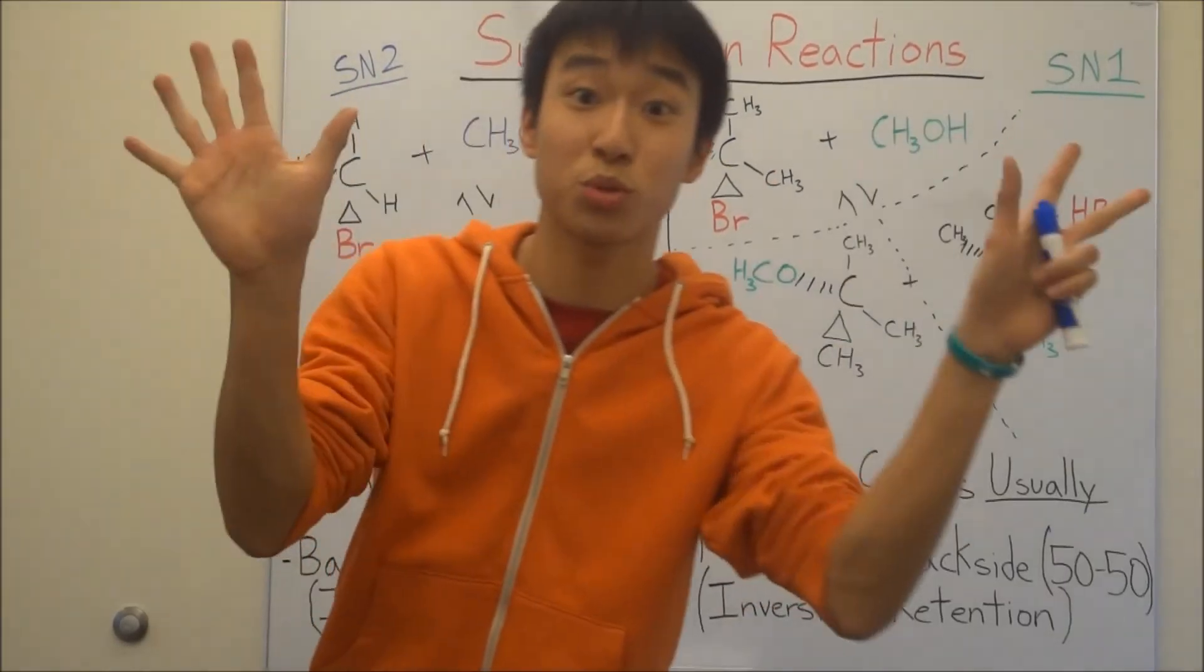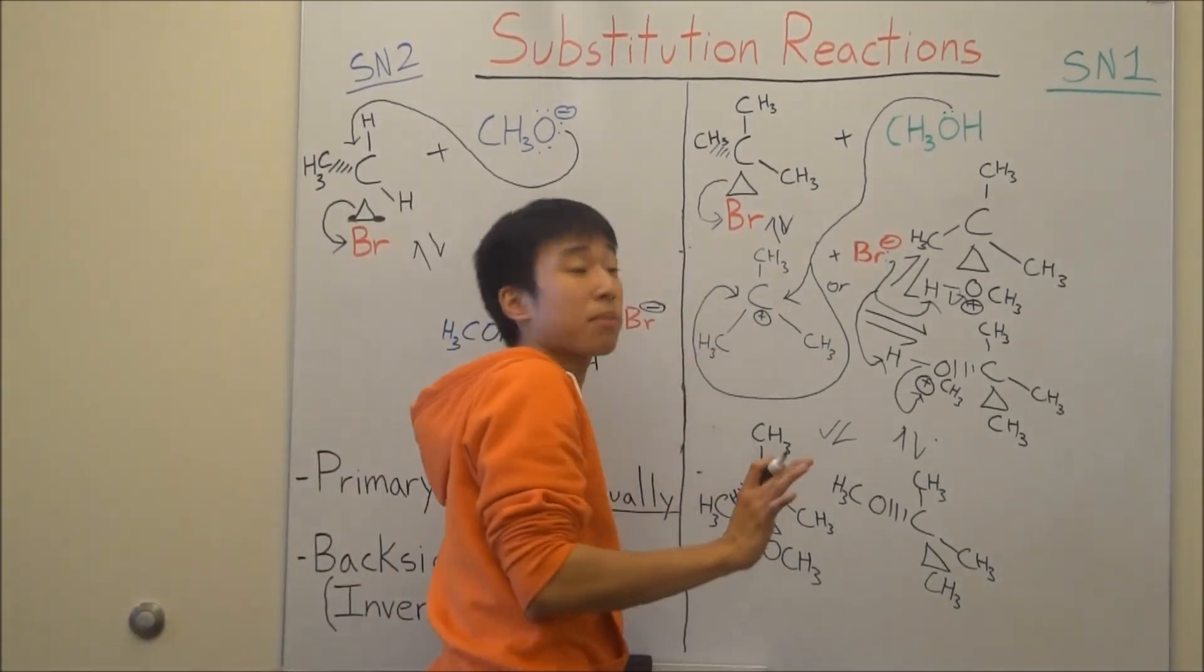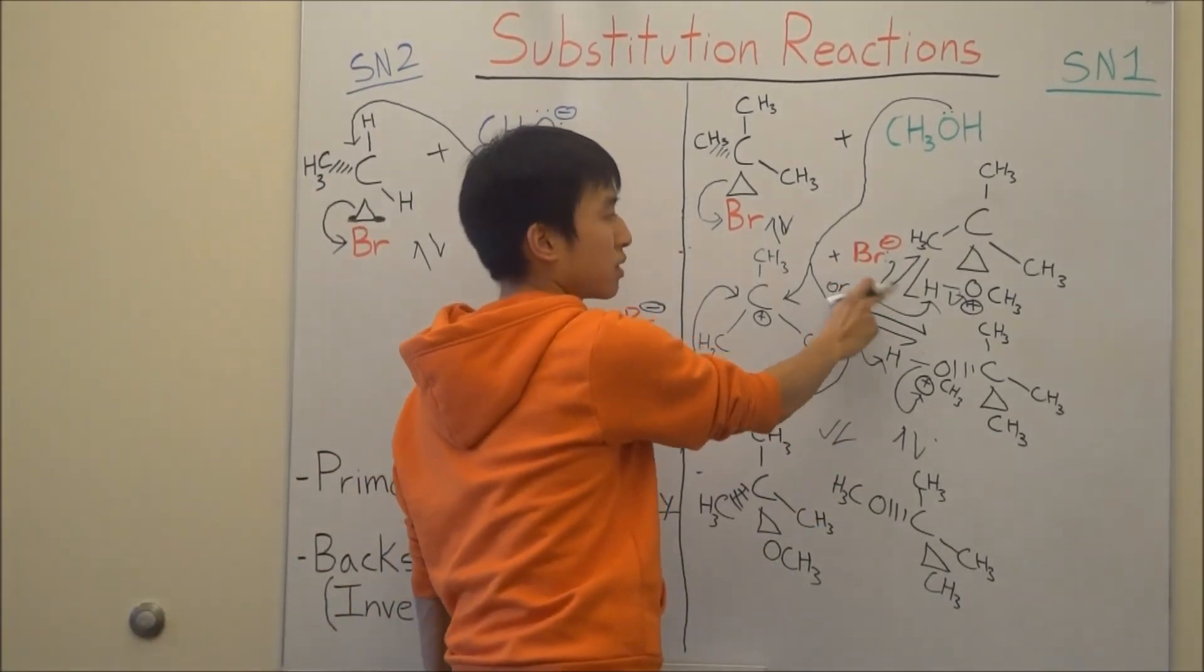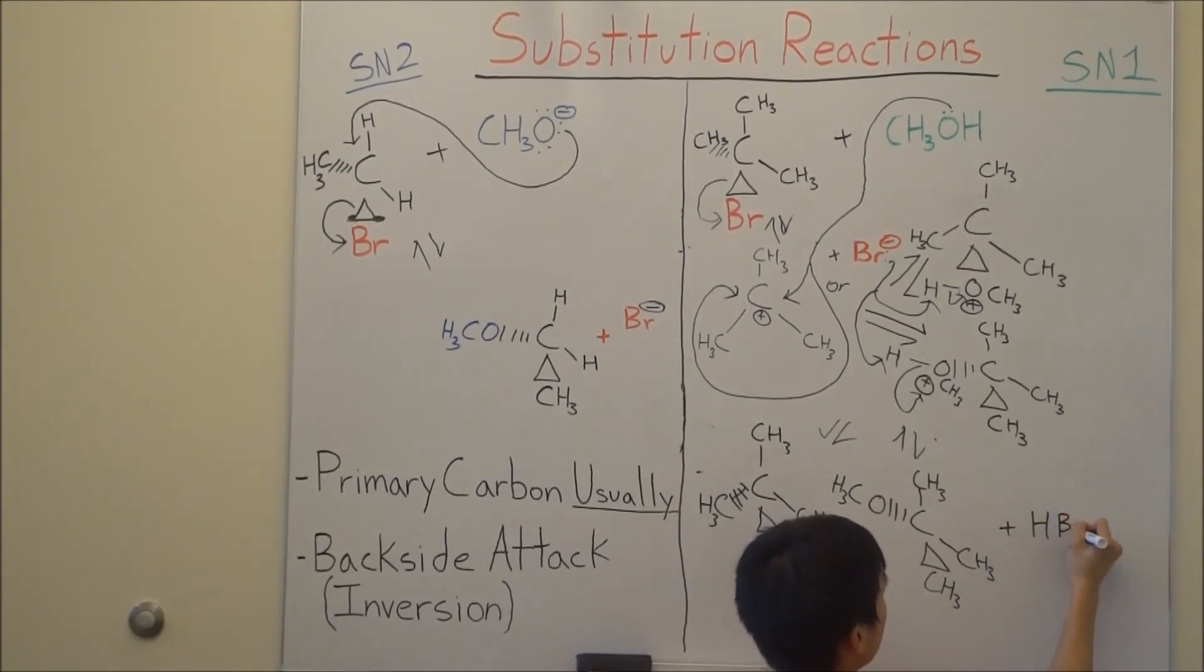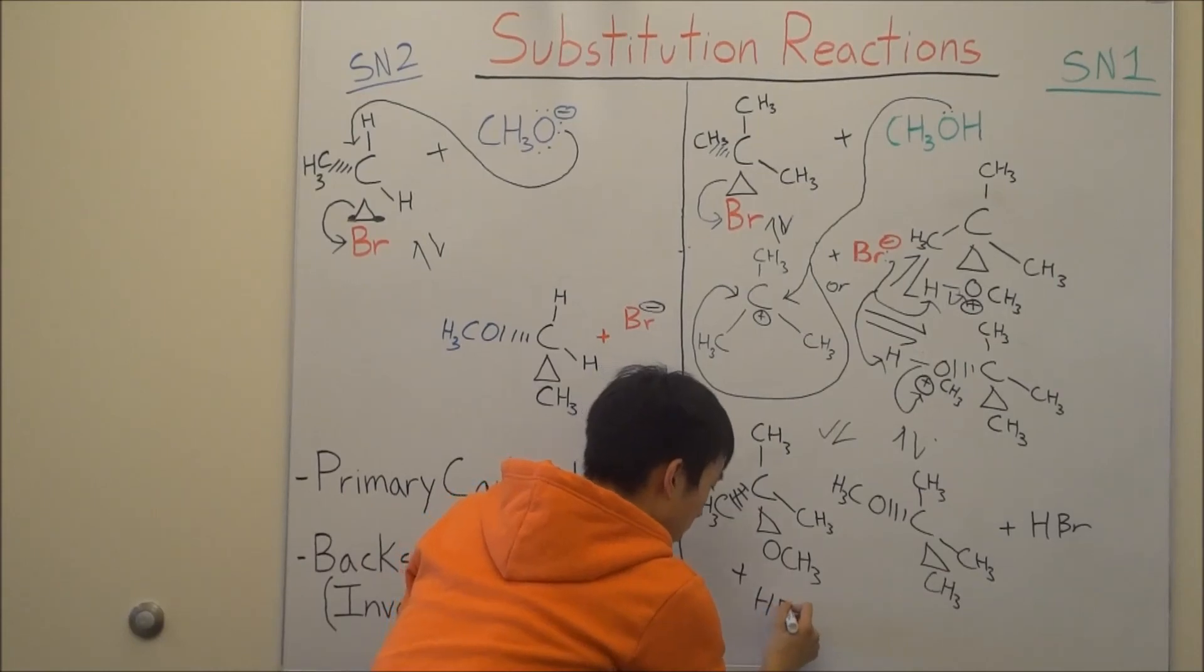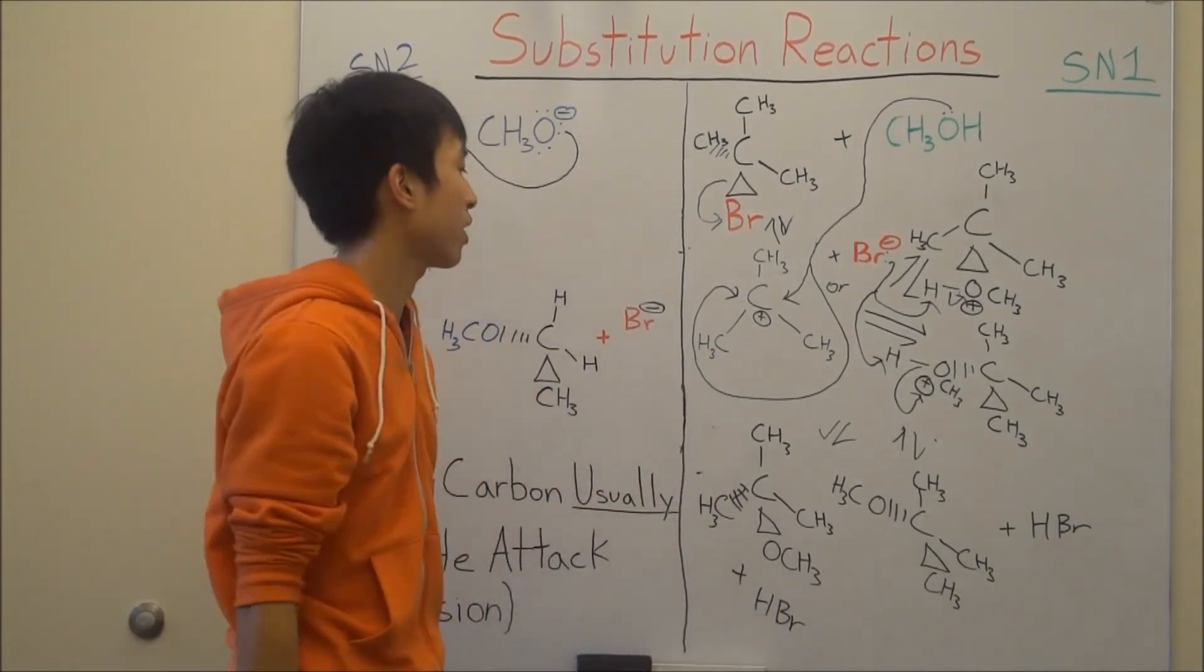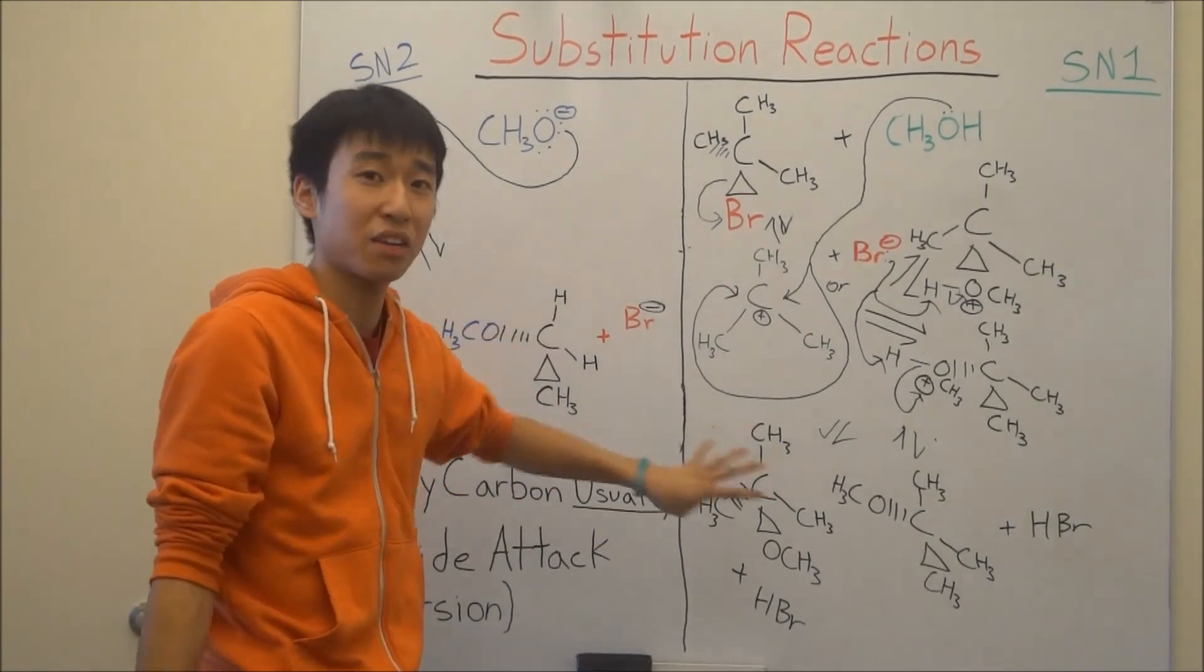And then you get your final products. Boom. Boom. That will be your two products, right? And you're not done because remember, your bromine took the hydrogens. So you end up with HBr. And HBr. Okay. All right. And that's basically it for SN2, SN1. I know this part got kind of crazy.